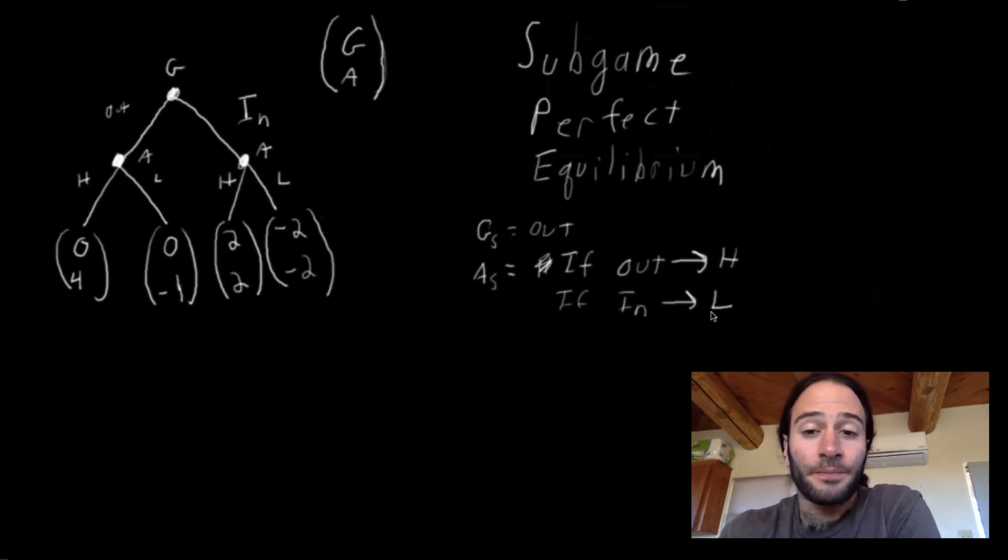And we said that this is a Nash equilibrium, but we also realized that if Google actually did switch its strategy to in, Apple wouldn't play L because it would get negative two, it would actually play H and get two.